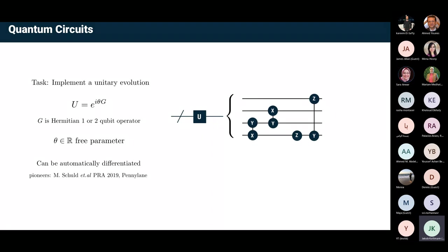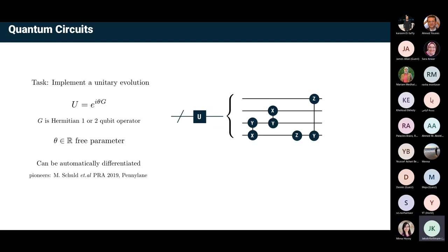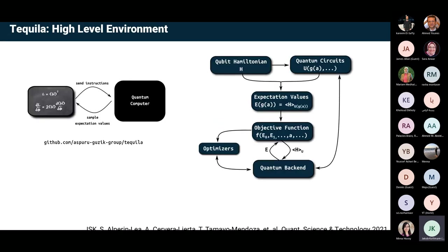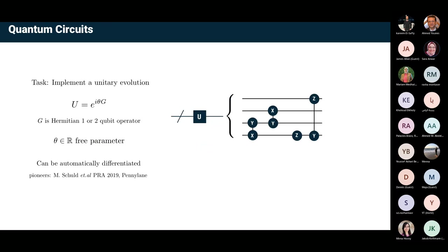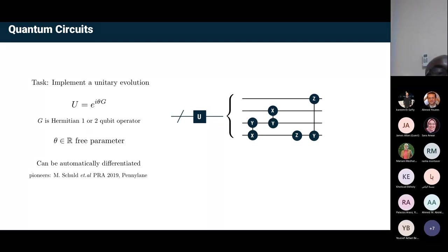Regarding a question in the chat about whether this is a theorem — I wouldn't call any of this a theorem, it's more like a linear algebra fact. But to be more precise: we can use these Pauli strings to represent all the measurements and unitaries we want, and it's enough to use just one and two qubit Pauli strings. This is actually powerful enough — I think this is a theorem from Solovay-Kitaev.